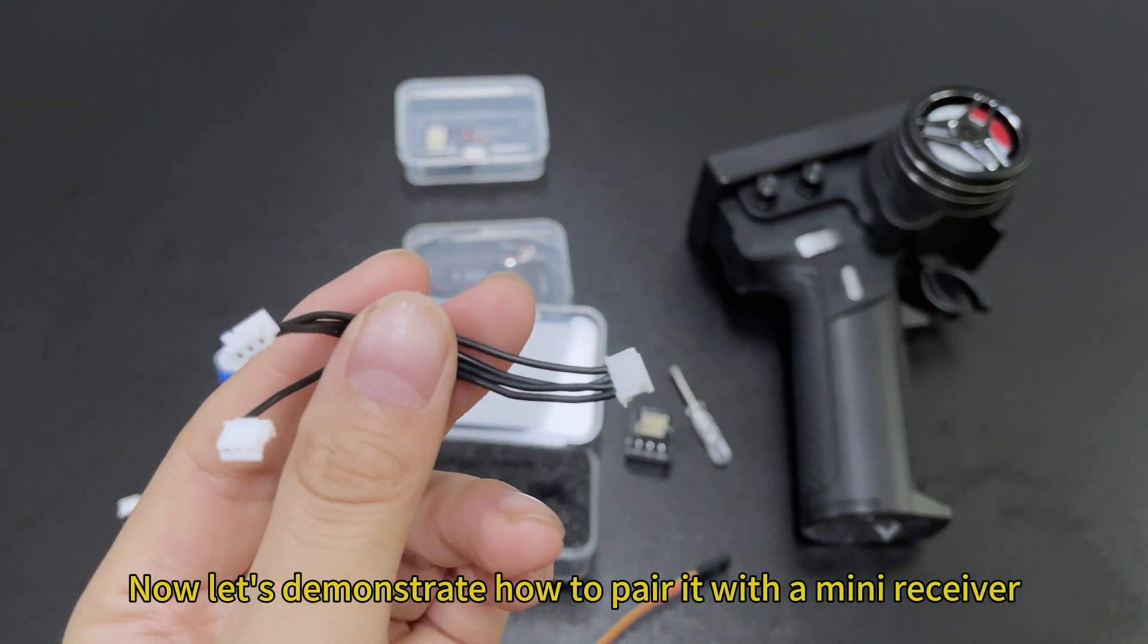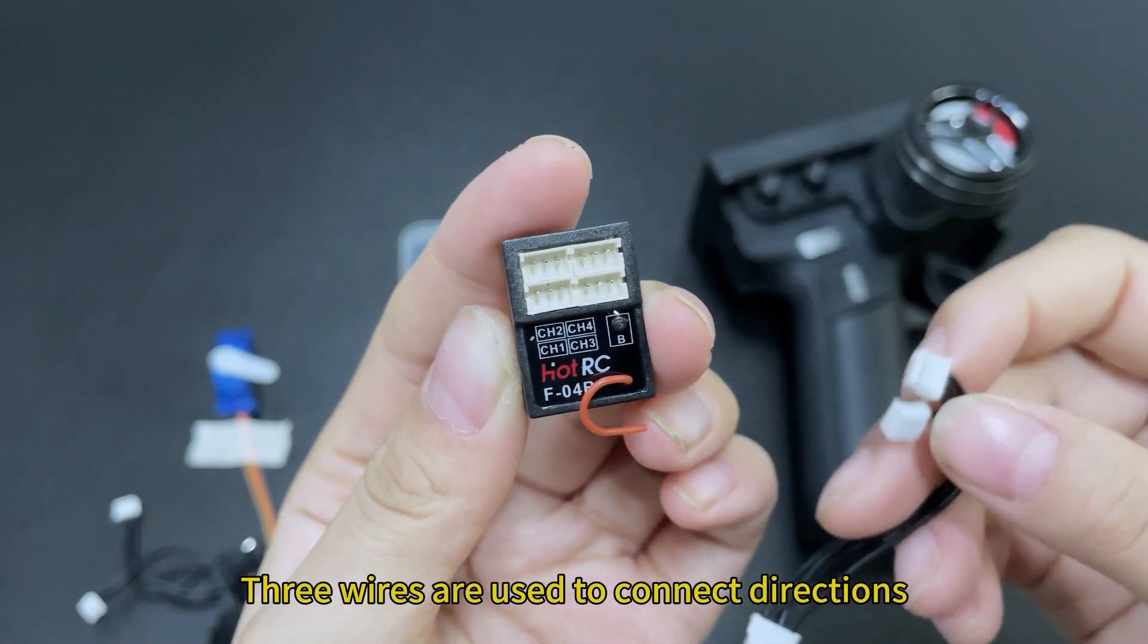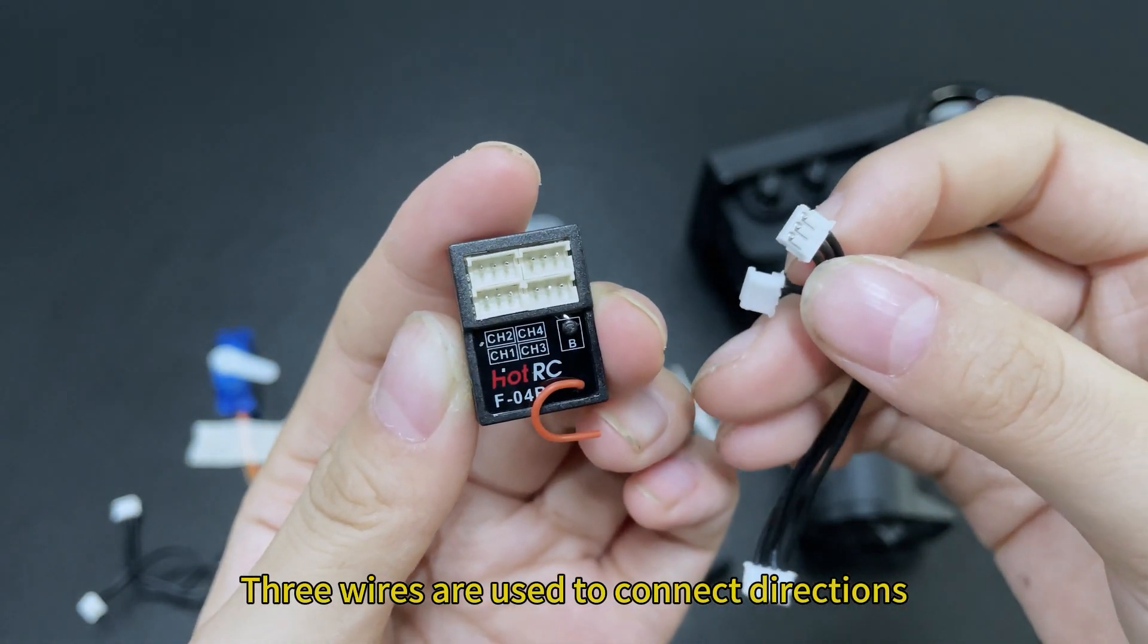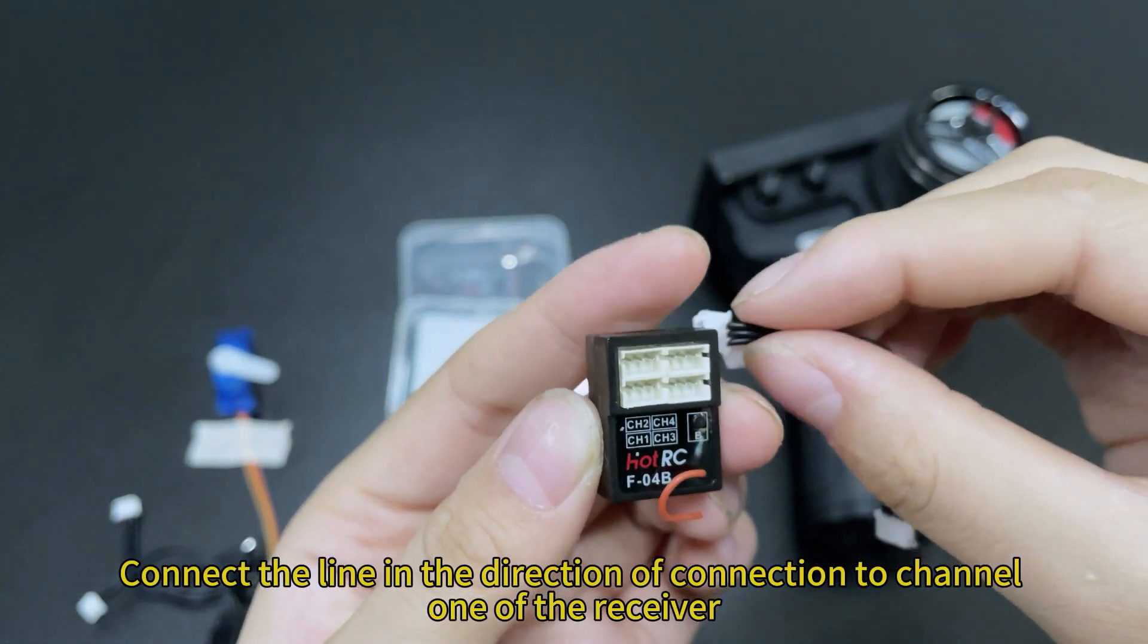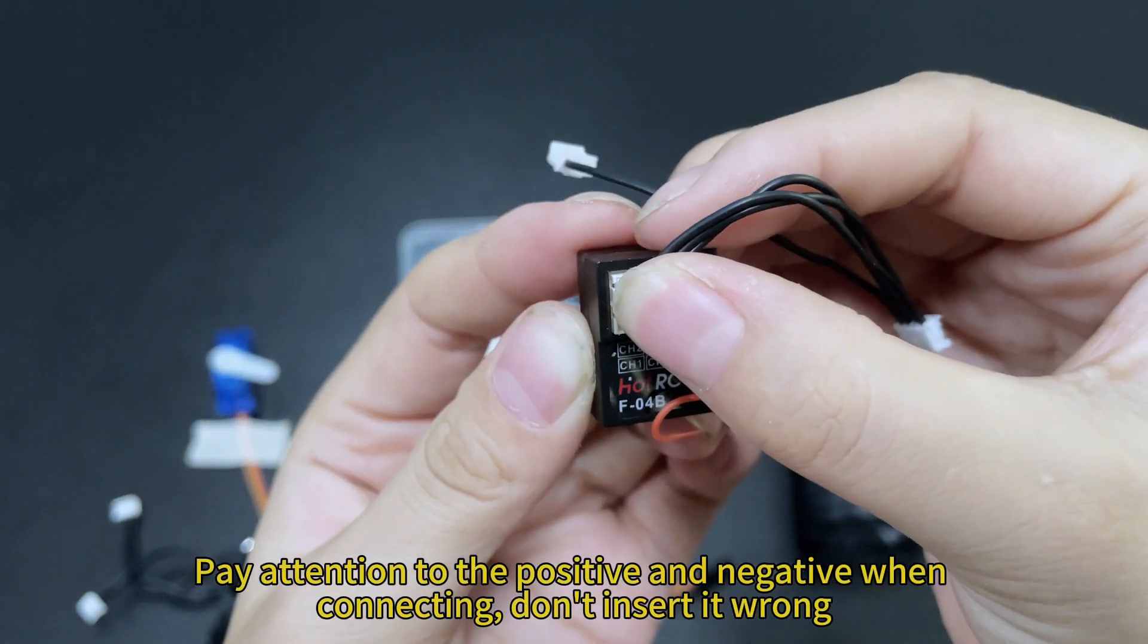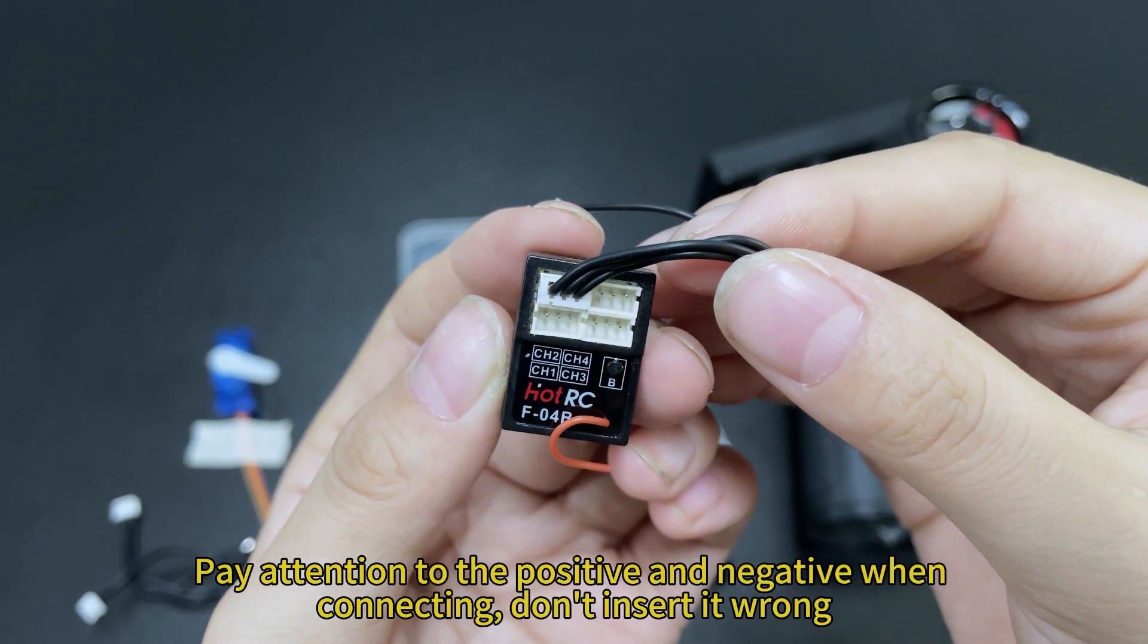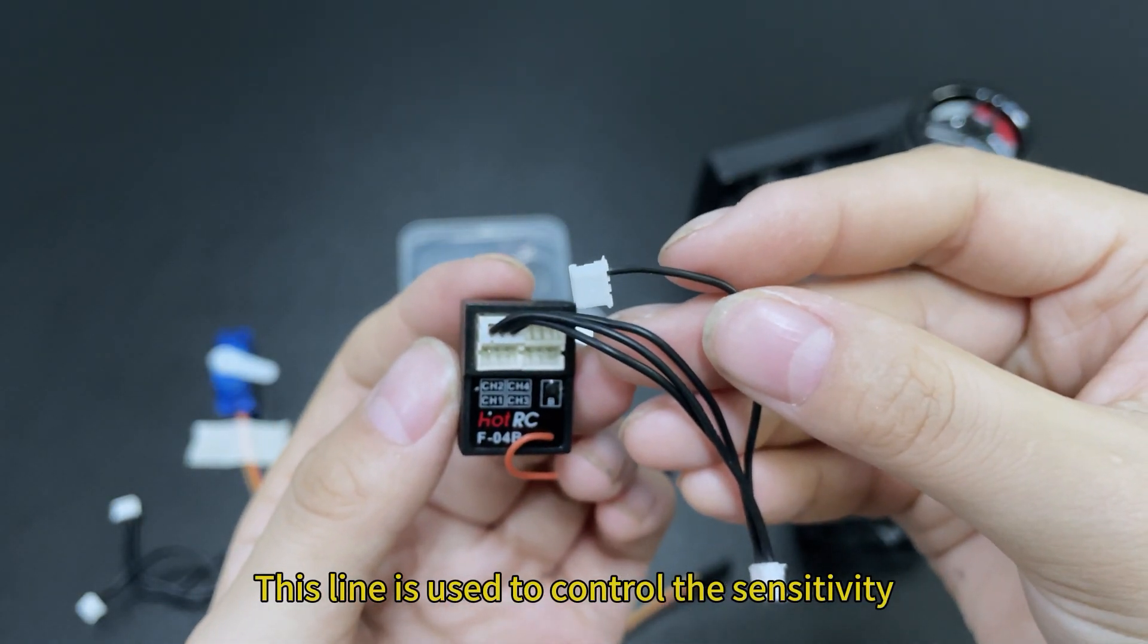Now let's demonstrate how to pair it with a mini receiver. Three wires are used to connect directions. Connect the line in the direction of connection to channel 1 of the receiver. Pay attention to the positive and negative when connecting, don't insert it wrong.